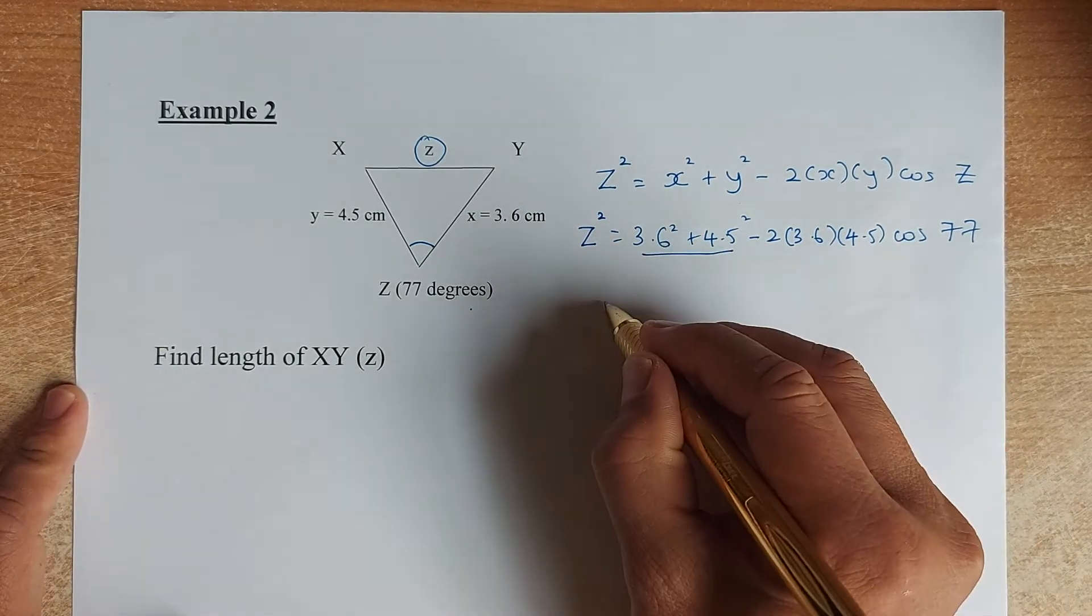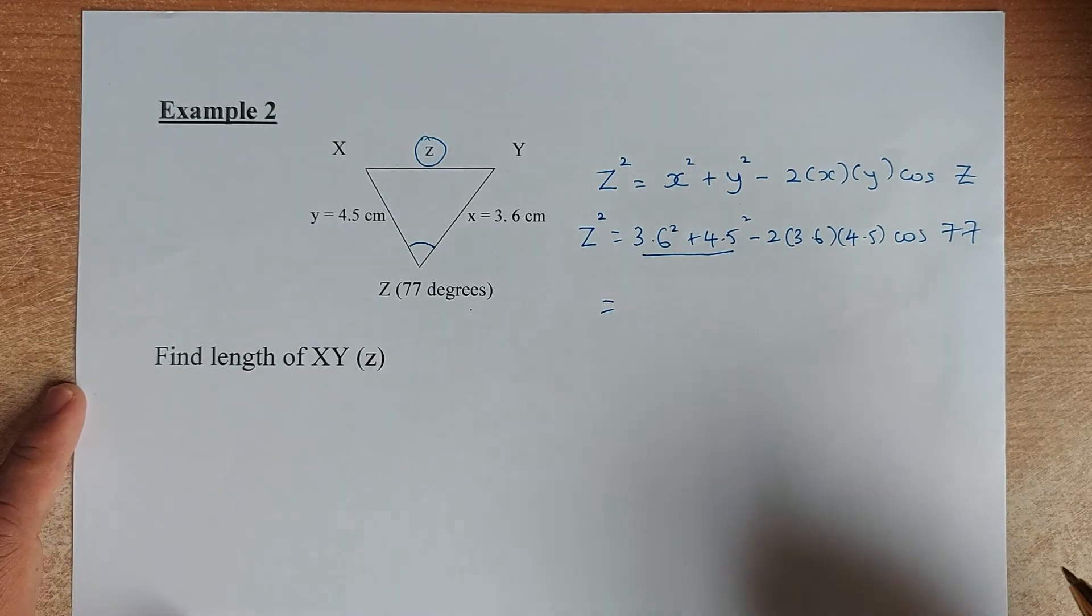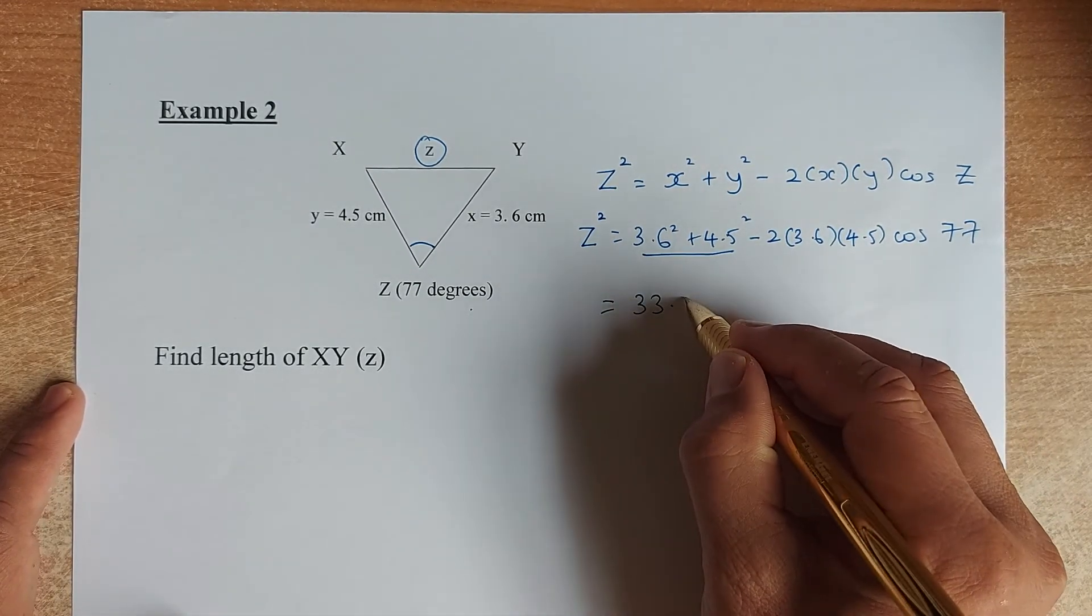So far so good? Now we're going to do the first part first. 3.6 squared plus 4.5 squared. Put your calculator and I found the answer to be 33.21.